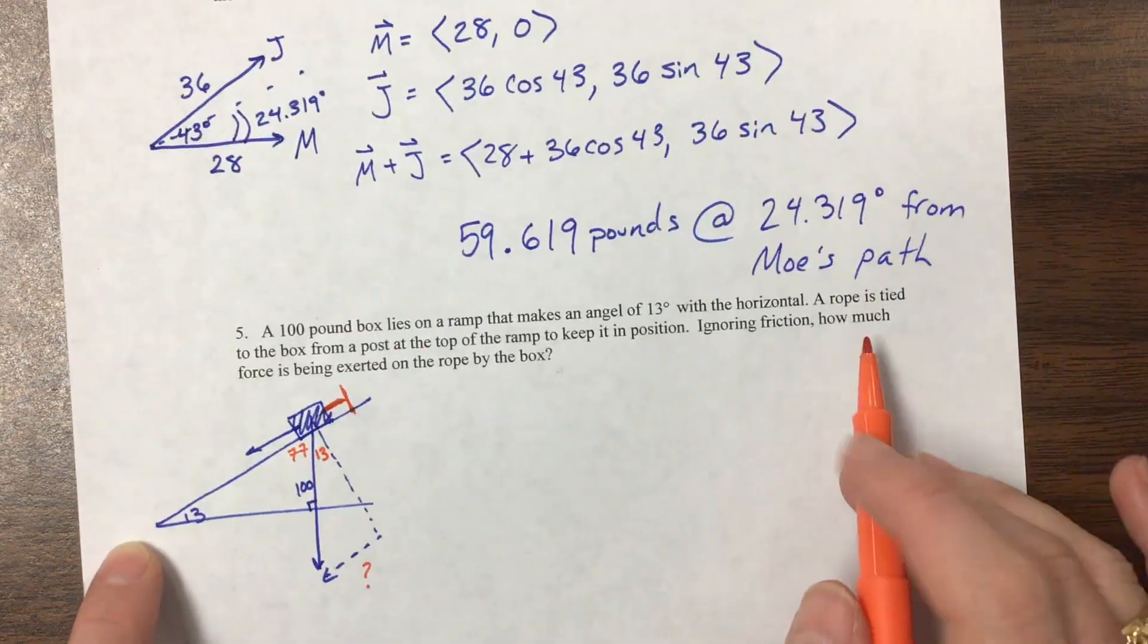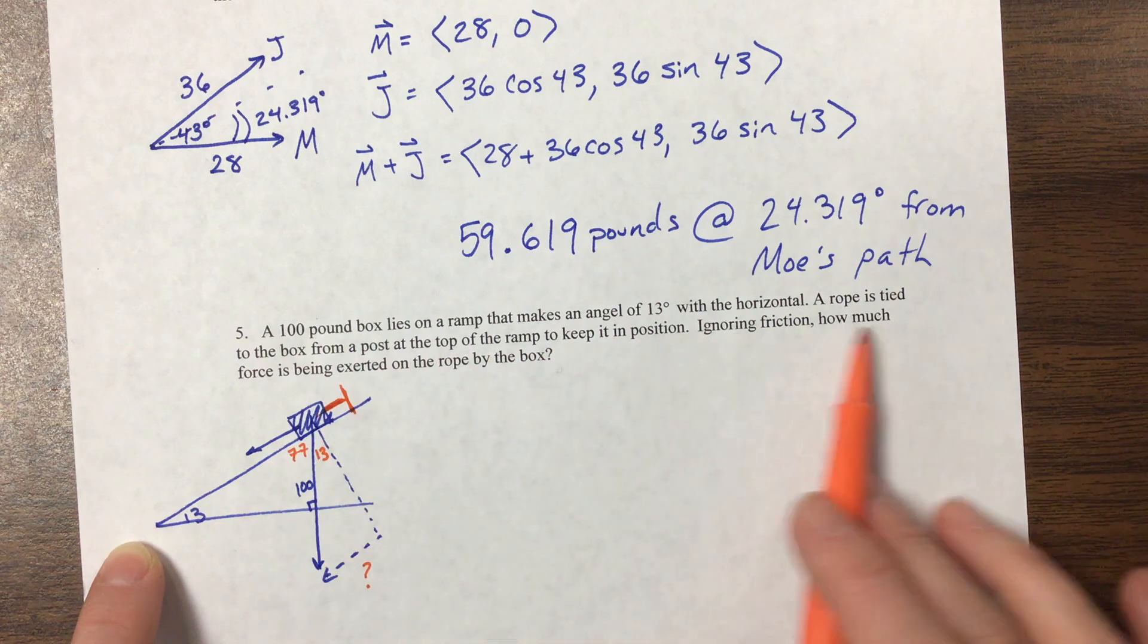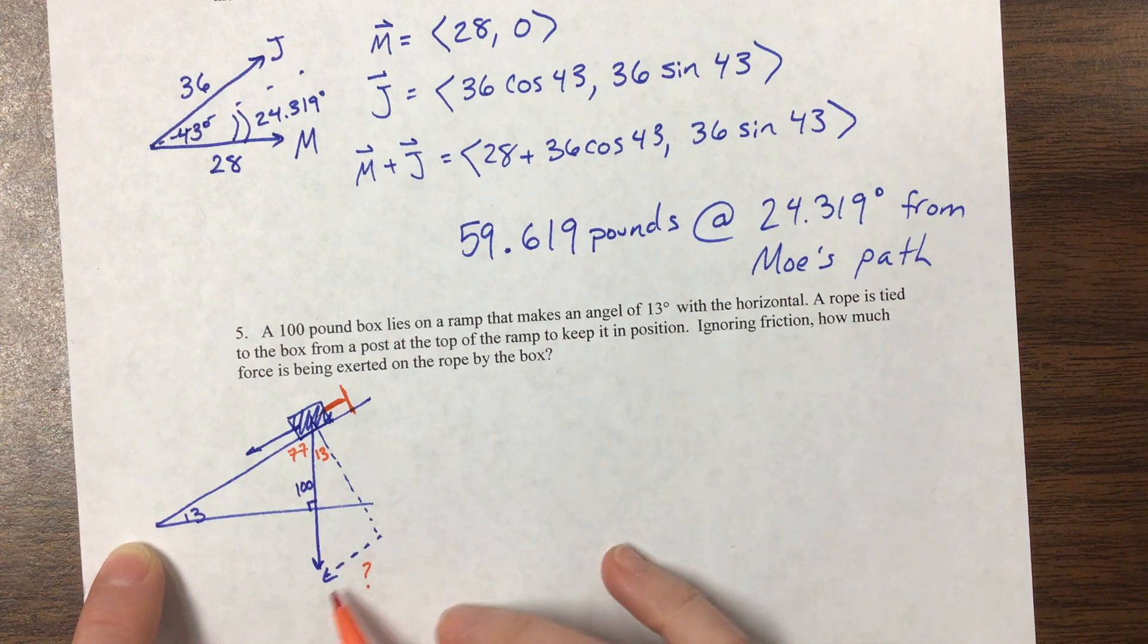A rope is tied to the box to the top of the ramp to keep it in position. Ignoring friction, how much force is being exerted on the rope by the box? Okay, so that's this that we're looking for right here.